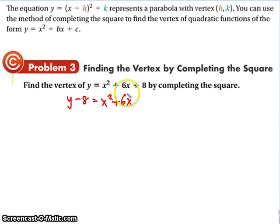So we want to get the 6x and the x squared by itself. So we're going to move the 8 over. I'm going to take this, cut it in half. I get 3. And I'm going to square it. I get plus 9. Remember, I have to do it to both sides. So what I have over here is y plus 1. And what I have over here is x plus 3 squared.